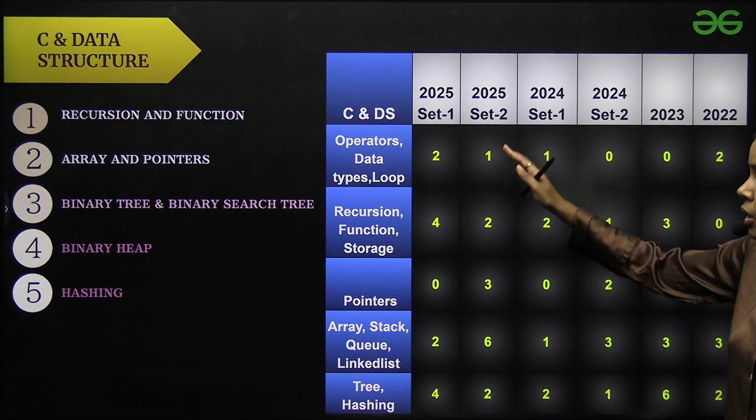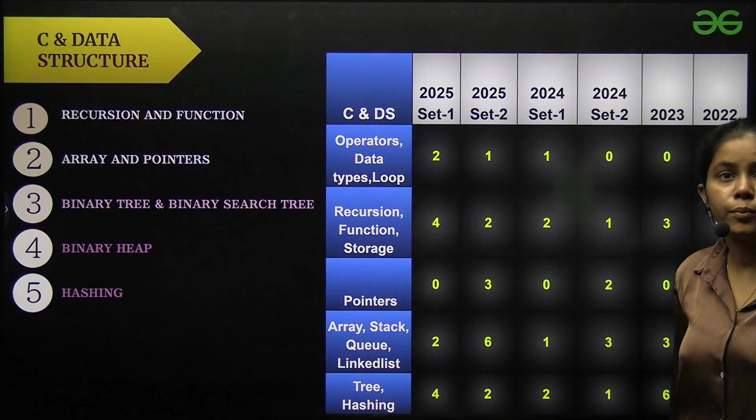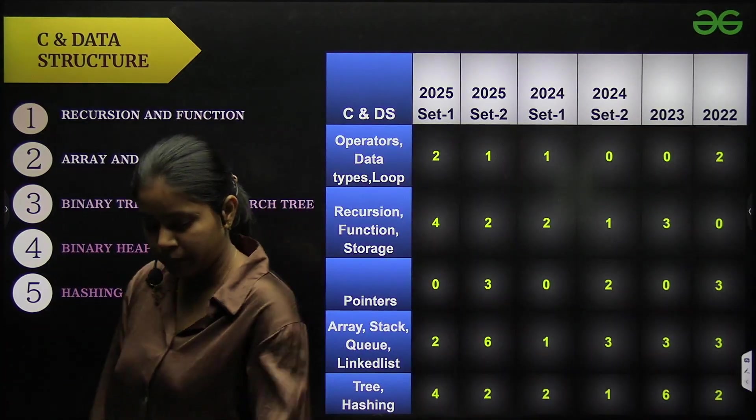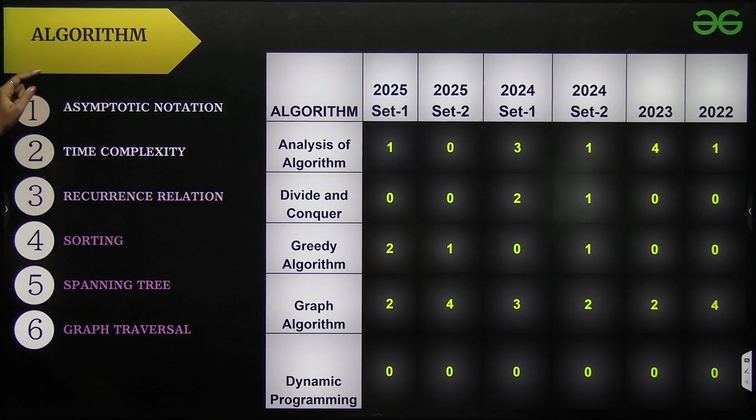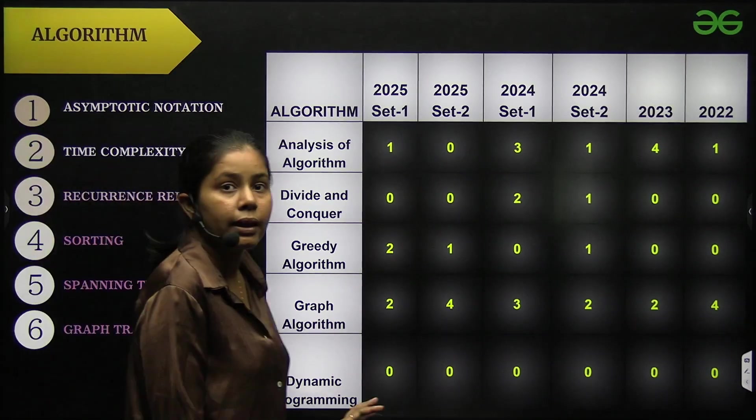Now next I have here is algorithm. In algorithm the topics are asymptotic notation, time complexity, recurrence relation, sorting, spanning tree and graph traversal. These are all the important topics.